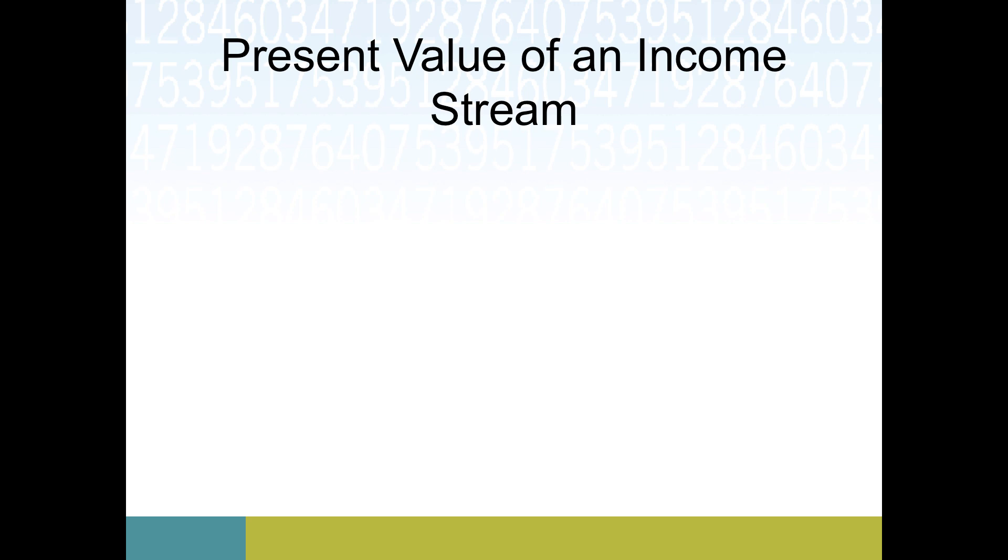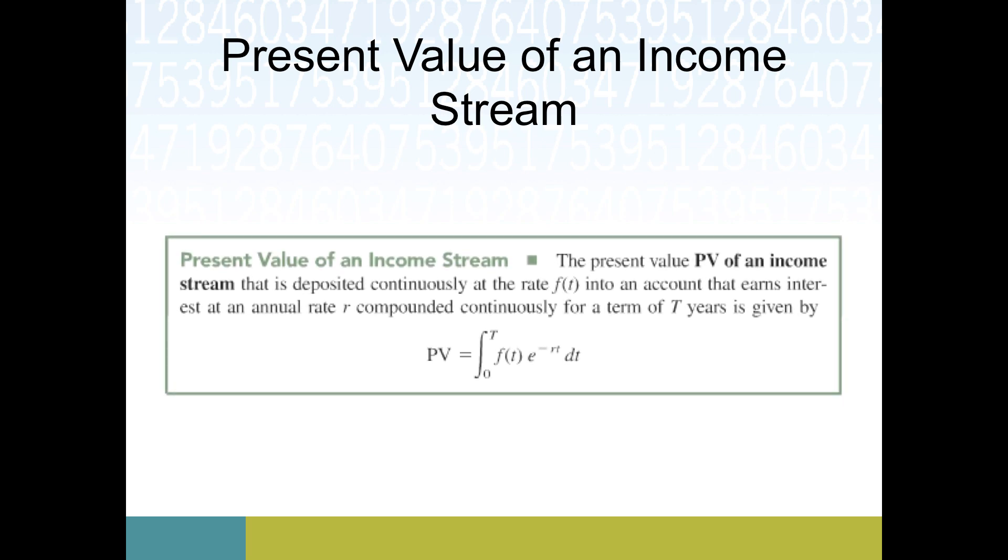The other side of this is present value, and this is a little bit harder to think about but it's actually easier to compute. The present value of an income stream is what would I need to deposit into an account regularly in order to have some amount of money at the end. The setup for this is essentially using the future value formula.